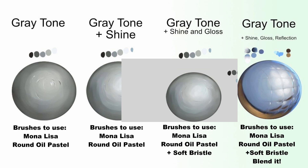Gray tone with shine and gloss — the gloss will enhance the shine and make it a bit smoother with the metallic effect. To do it, use very light strokes with the Soft Bristol.